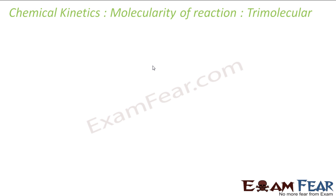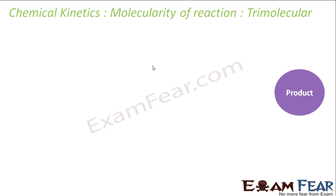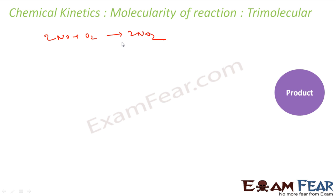The next is a trimolecular reaction, where a collision between three reacting species takes place. For example, 2NO + O2 → 2NO2 is an example of a trimolecular reaction. The probability that more than three molecules combine in one step is very low, and therefore molecularity greater than 3 is not observed.